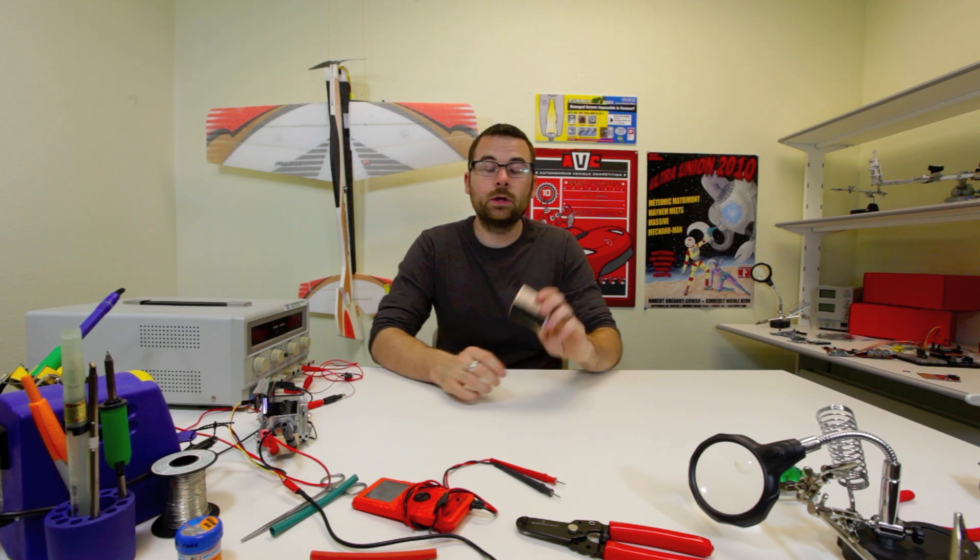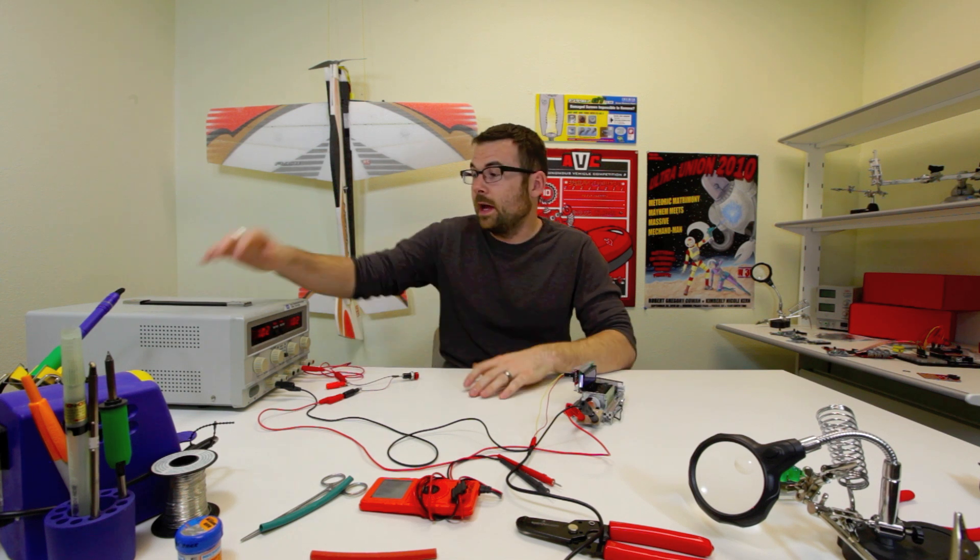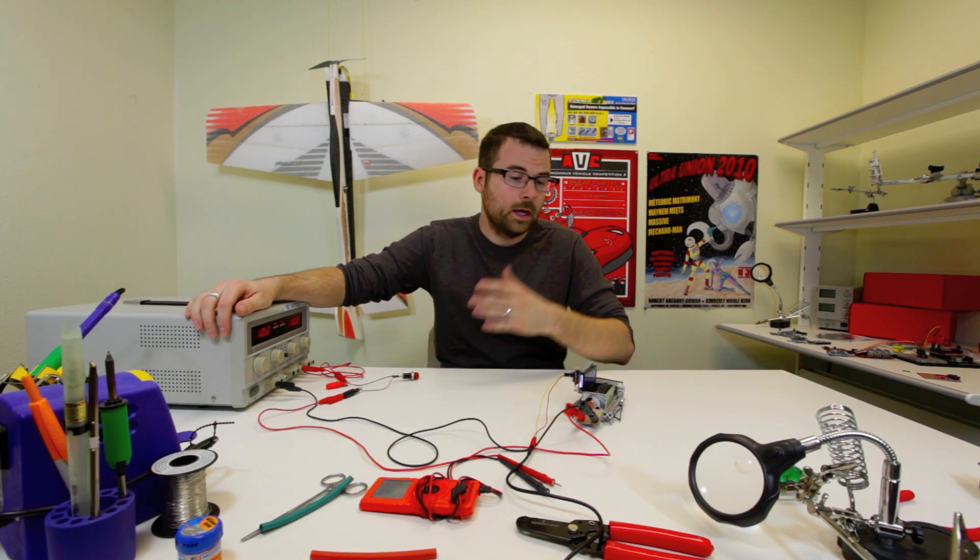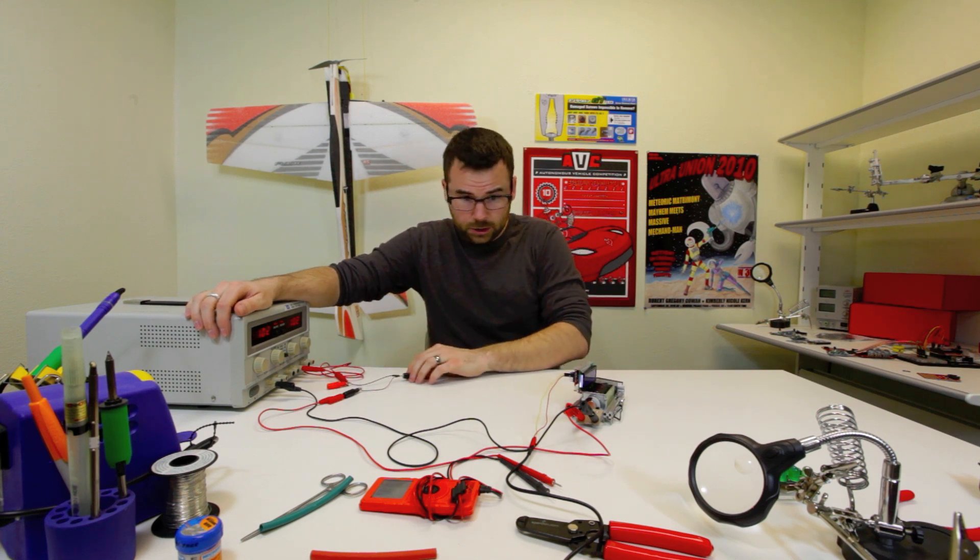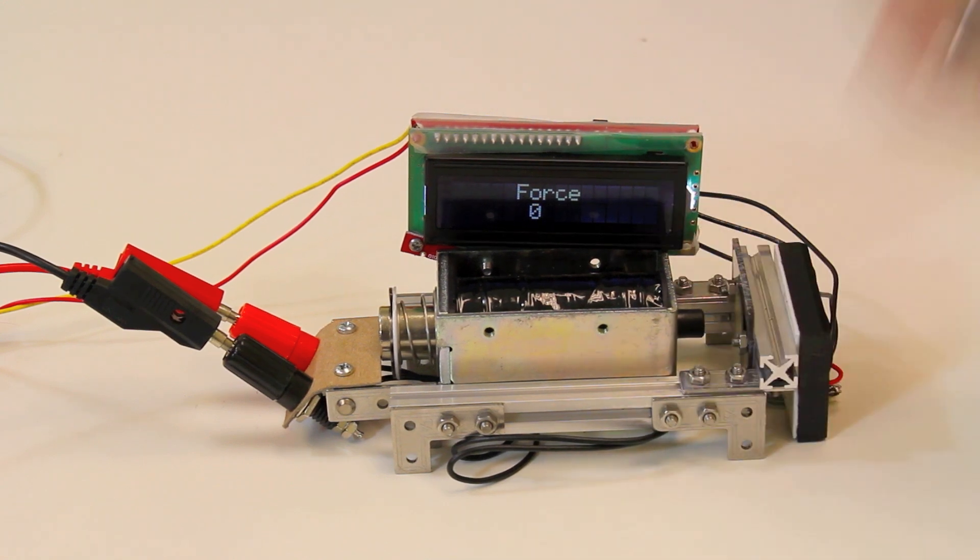So let's hook this up and see what it does. Here we've got a little setup to test the solenoid. We've got a benchtop power supply that can provide up to about 38 volts. We've got that plugged in through a switch, plug directly into the solenoid.